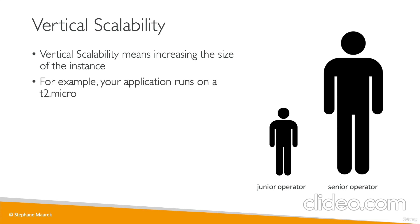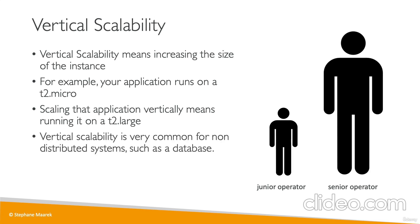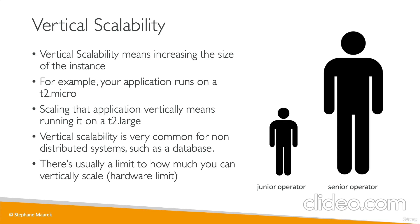In AWS, say your application runs on a T2 micro. To do vertical scalability, you'd run it on a T2 large — you've changed the size of the EC2 instance. Vertical scalability is very common for non-distributed systems like databases, where you just increase the size. But there is a hardware limit to how much you can vertically scale, even though nowadays these limits can be very high.